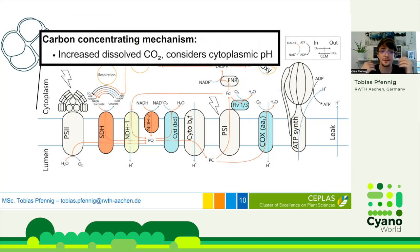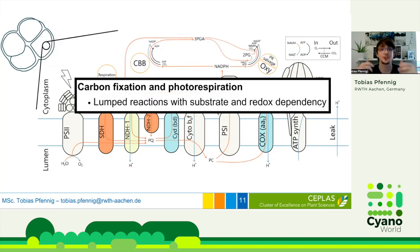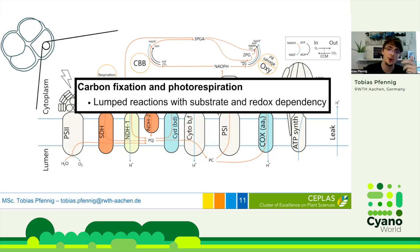We also include the carbon concentrating mechanism, which increases the CO2 concentration for higher efficiency CO2 fixation. In our model, the concentration is increased by a constant factor, but it does consider the cytoplasm pH to calculate how much CO2 is actually usable for fixation. We lastly include carbon fixation and photorespiration, which are very large downstream pathways. Since they're so large, we lump them into single reactions that estimate the effect of both pathways on photosynthesis without adding all intermediate reactions. These lumped reactions have substrate dependency and are regulated by redox.